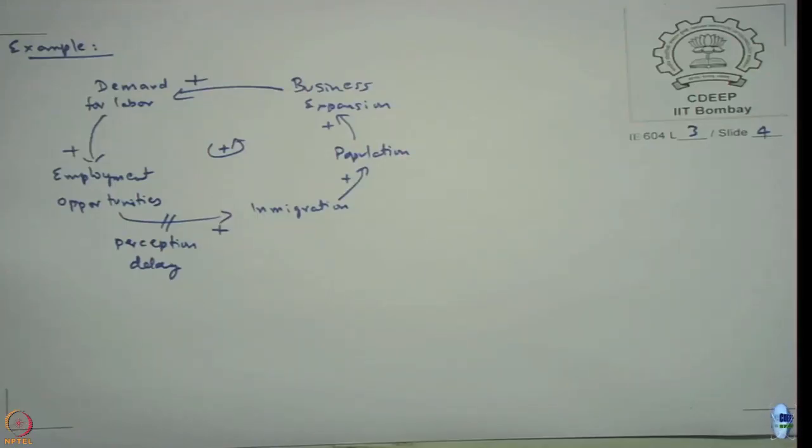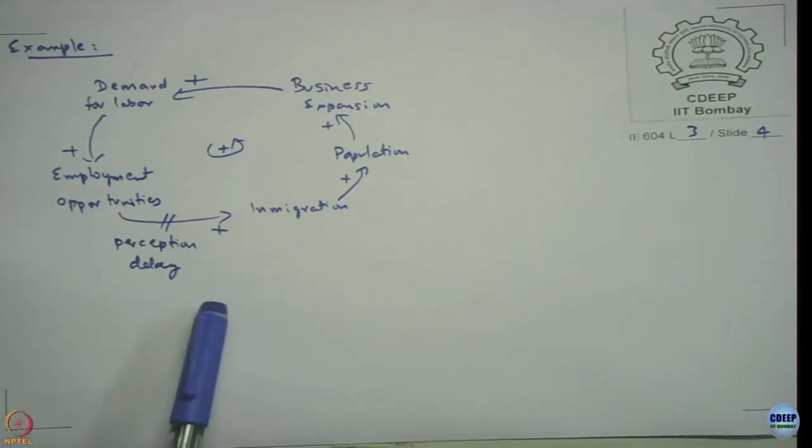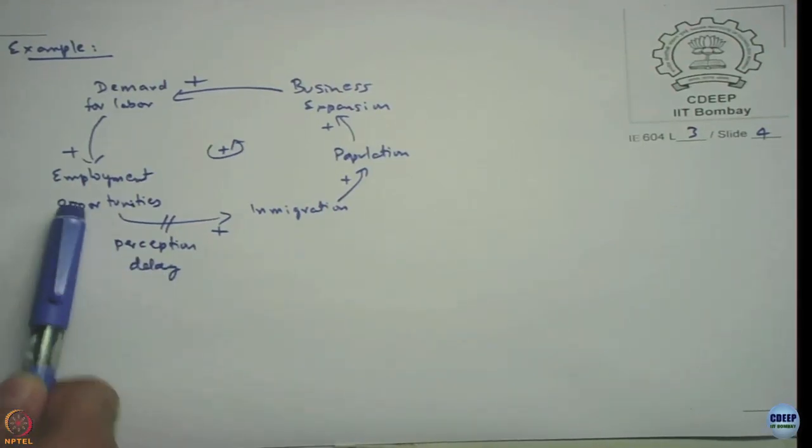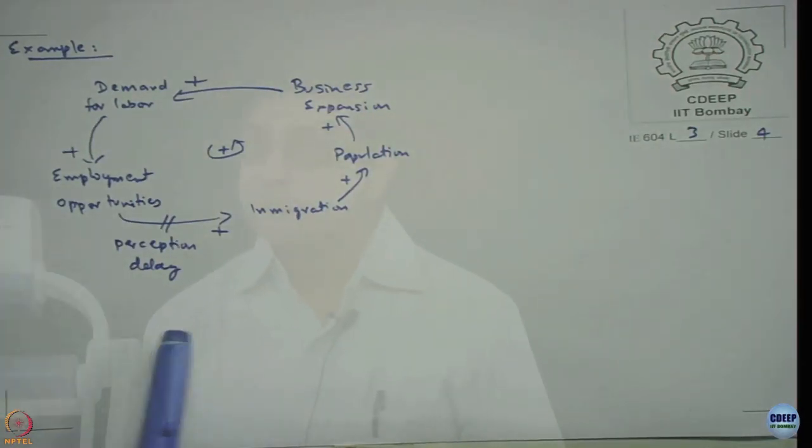One way to model it is to have employment opportunities lead to perceived employment opportunities, which then leads to in-migration — with the delay sitting between employment opportunities and the perceived employment opportunities. Even if employment opportunities stop today, people will still come to the city because they perceive they will get a job. Only after a few years does the message spread that it is very difficult to get jobs, and then in-migration will lessen.